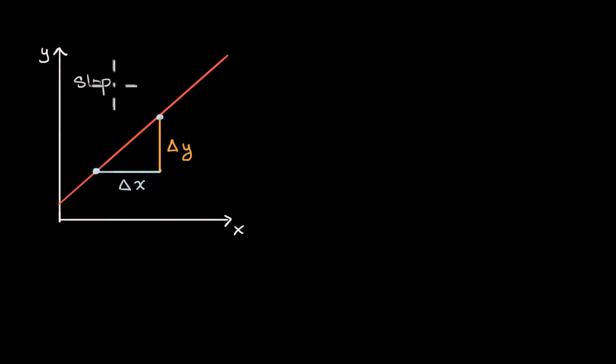So slope is equal to the rate of change of our vertical variable over the rate of change of our horizontal variable. It's sometimes described as rise over run. And for any line, it's associated with a slope because it has a constant rate of change.